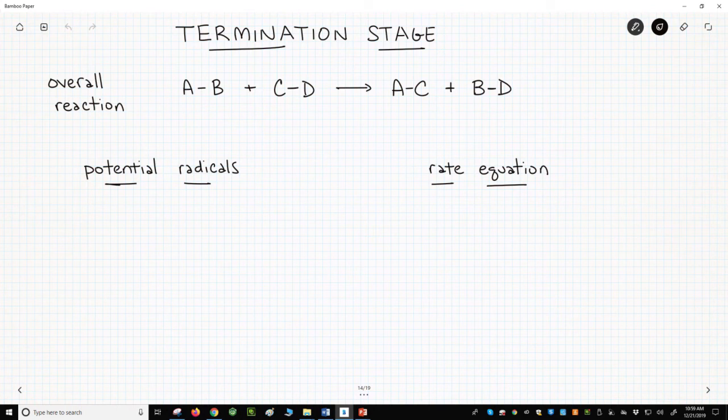In the past two videos, one on initiation and another on propagation, we have mentioned three potential radicals in our mock reaction. A dot formed in the initiation stage and cycled through the propagation steps. B dot formed in the initiation stage and D dot appeared in the propagation steps.